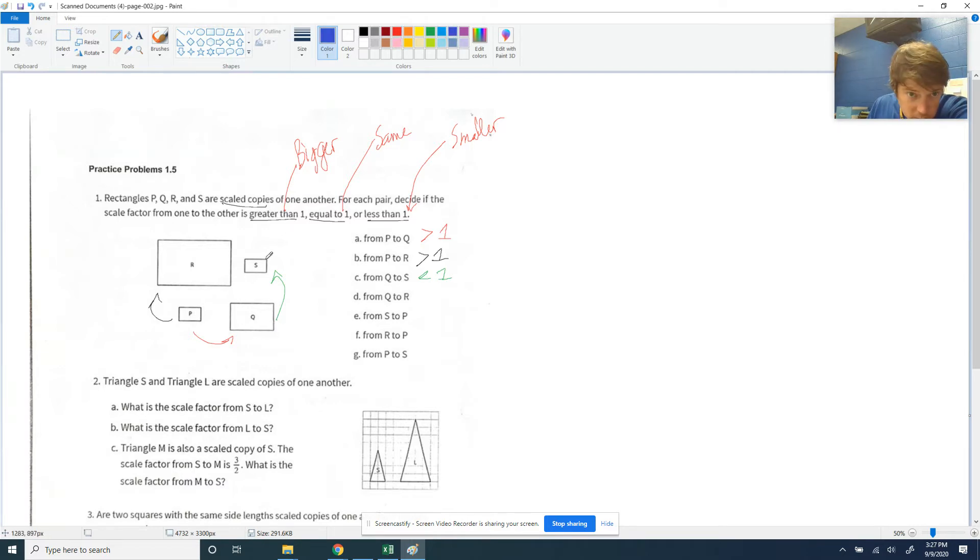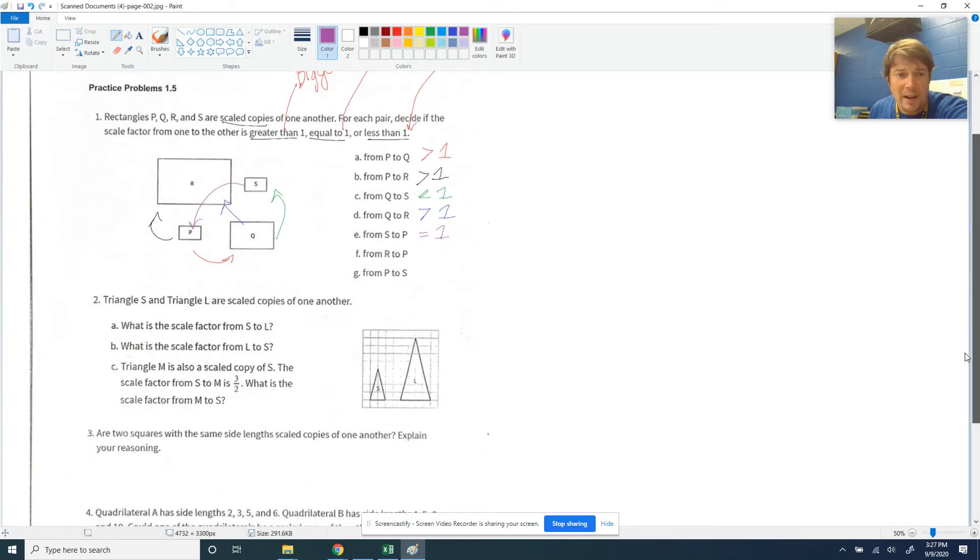Q to R. That would be from here over here. That's getting bigger, so greater than 1. All right, S to P. That's coming this way, and those look identical, so that would be equal to 1. And then R to P. This one's getting smaller. P to S, same size. I think you can take it from there. I'm not going to write down every one of those.